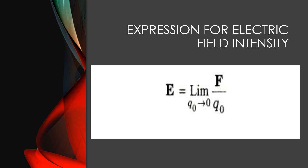Here is one more change: we introduce the limit as test charge approaches zero. Why is it needed? When q-naught approaches zero, it means that q-naught, or the test charge, is very small. Why do we have to take it very small? So that the presence of this test charge may not disturb the charge distribution of the source charge producing the electric field. That is why we take the test charge as very small, so there is no problem to the charge distribution of the source charge, because the source charge has the lead role of producing the electric field.